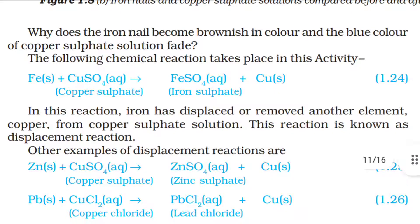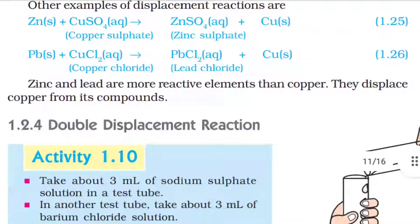Other examples of displacement reactions are: Zn (solid) + CuSO₄ (aqueous) → ZnSO₄ (aqueous) + Cu (solid); and Pb (solid) + CuCl₂ (aqueous) → PbCl₂ (aqueous) + Cu (solid). Zinc and lead are more reactive elements than copper, and they displace copper from its compounds.